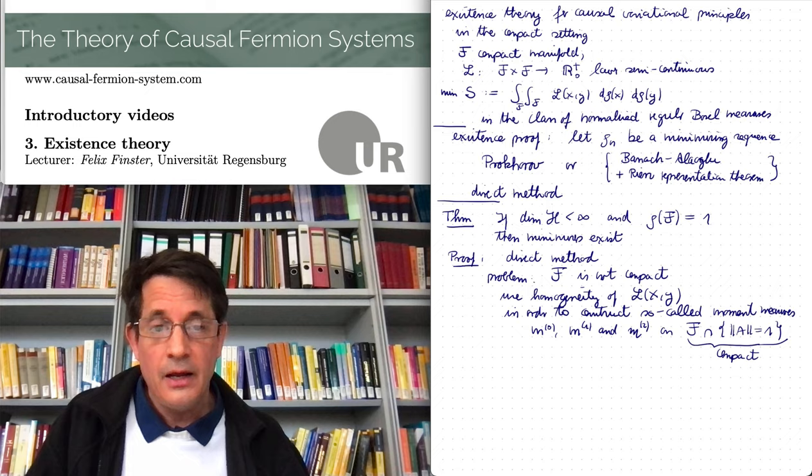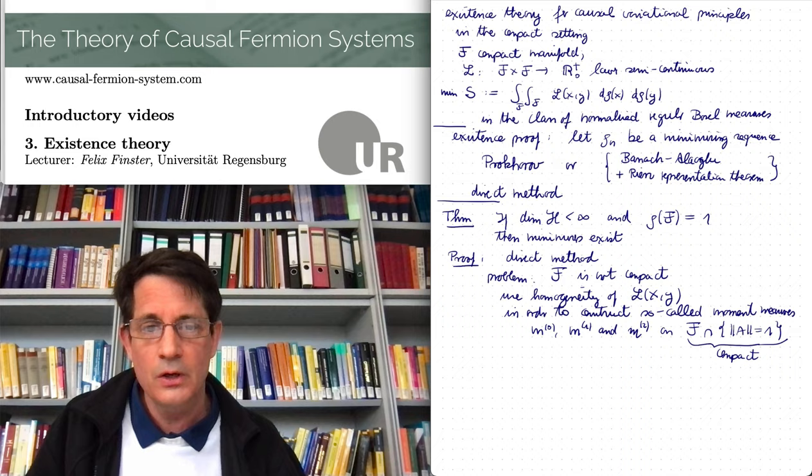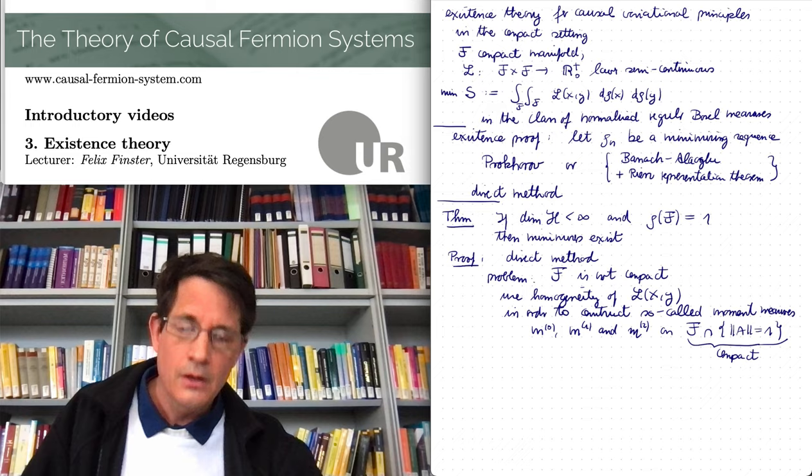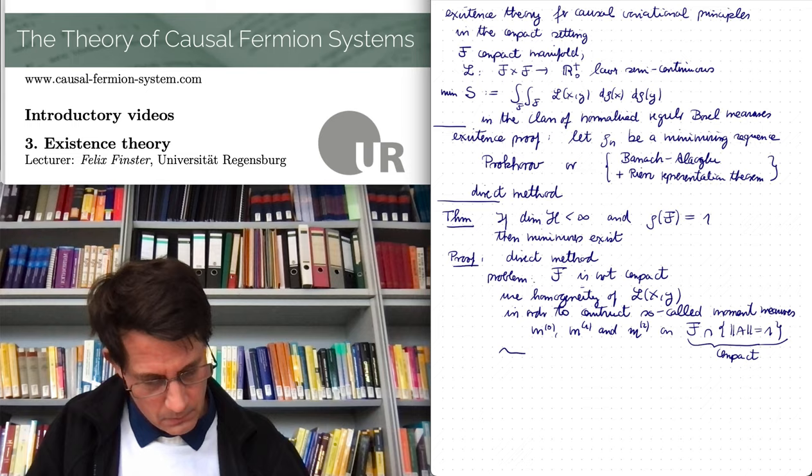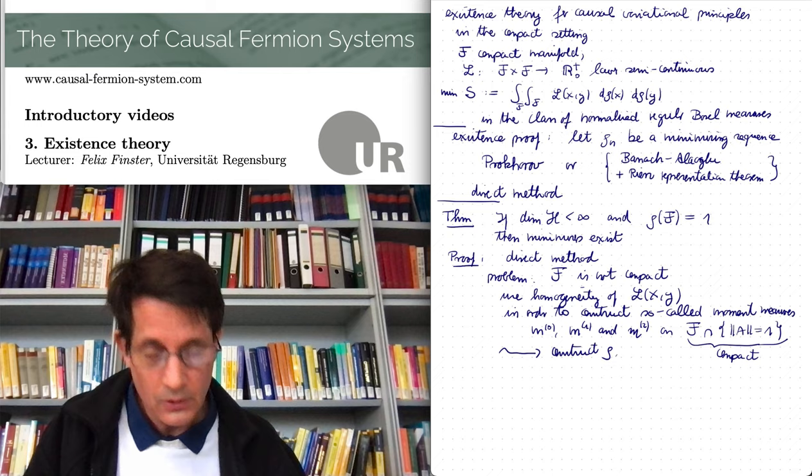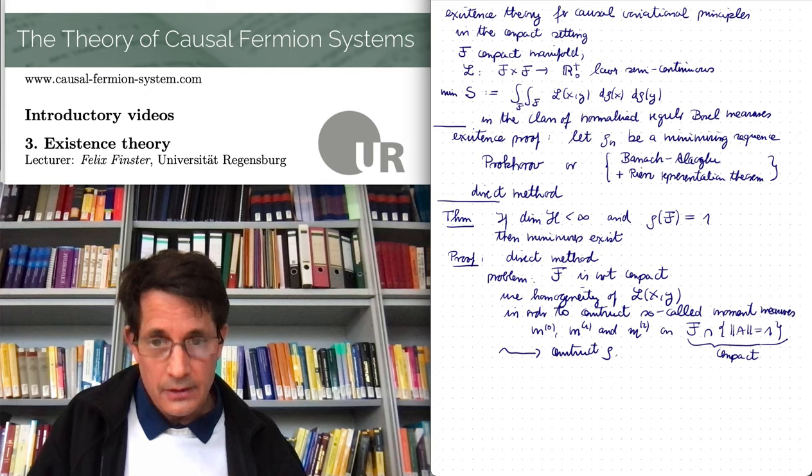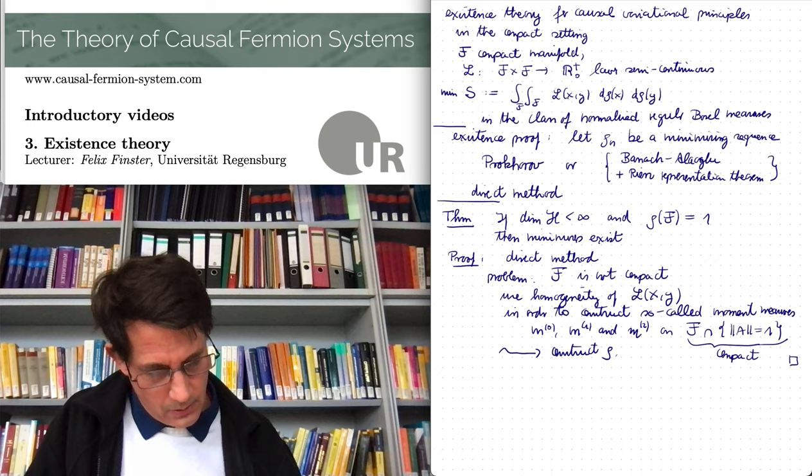And therefore for these moment measures one can again use Banach-Alaoglu and Riesz representation theorem. And then there is one more tricky point. Let me suppose now we have this limiting moment measure. So the limit of the moment measures. Can they again be realized by a measure rho? And this can in fact be done. And so this is a bit more technicality. Again, it's not really hard. And you see the details in the online course.